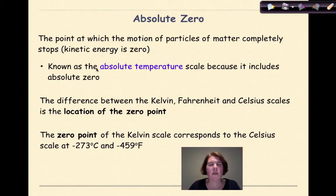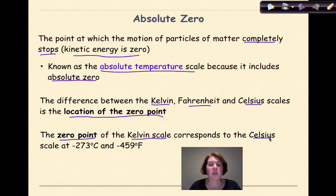And then we're going to look at the concept of absolute zero. Now what is absolute zero? Absolute zero is the point at which the motion of particles of matter completely stops. So the kinetic energy is zero. This is known as the absolute temperature scale because it includes absolute zero. So technically, at least in the range of this course, the lowest possible temperature is absolute zero, zero Kelvin. The difference between the Kelvin, the Fahrenheit, and the Celsius scale is the location of the zero point. Where zero is located. The zero point of the Kelvin scale corresponds to the Celsius scale at negative 273 degrees Celsius. But what you really need to know is where that zero point is compared to Celsius.